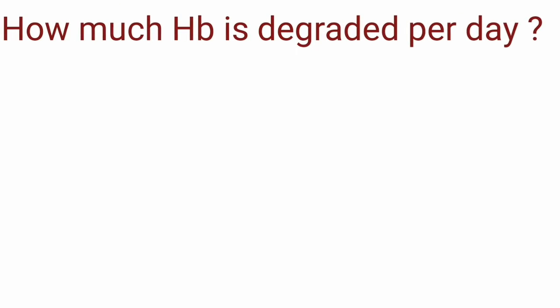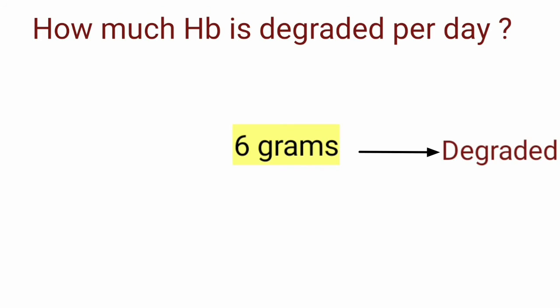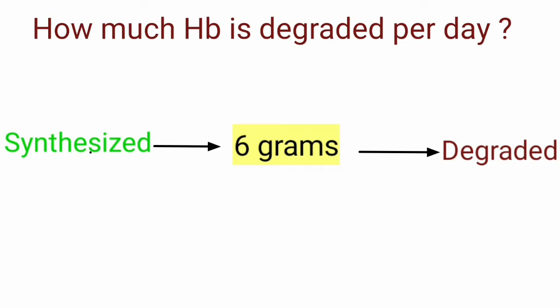How much hemoglobin is degraded per day? About 6 grams of hemoglobin is broken down and resynthesized in adult humans per day.